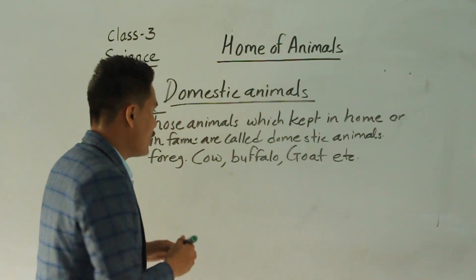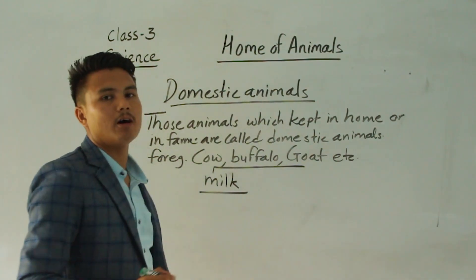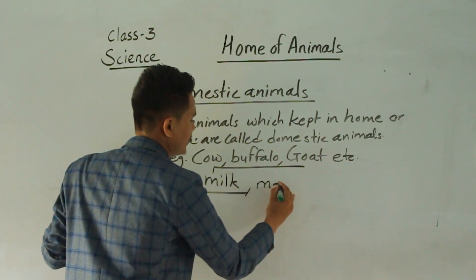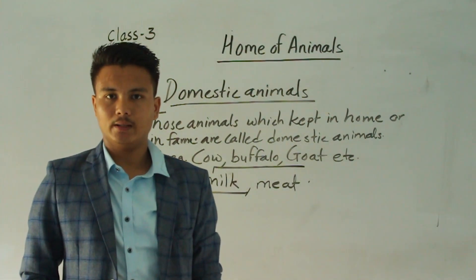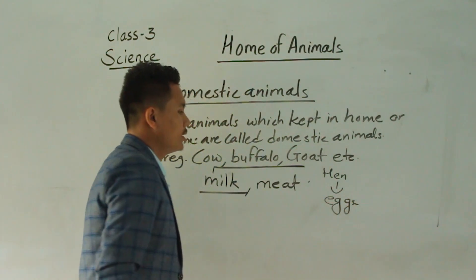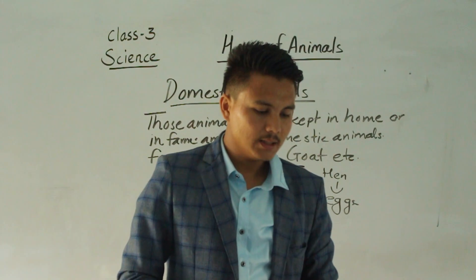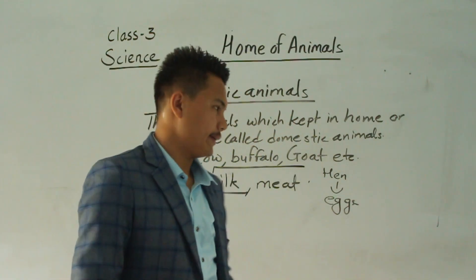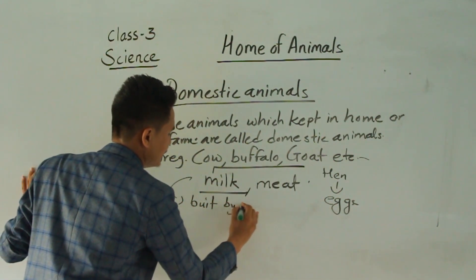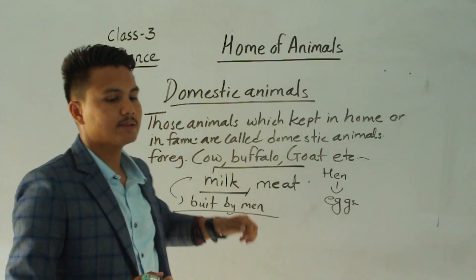We get meat from some domestic animals, and from hens we can get eggs. So there are lots of uses of animals. The homes of domestic animals are built by man — the home of domestic animals is made by man.